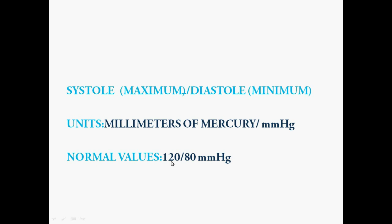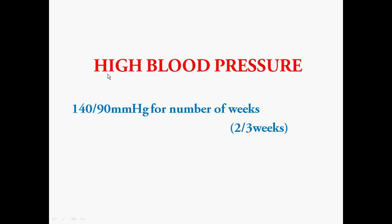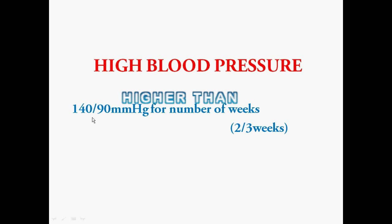The normal value of BP is 120/80 mmHg. A patient is said to have high blood pressure if they have a BP of 140/90 mmHg over a number of weeks. This time period — more than two or three weeks — is very important to diagnose high blood pressure. If a patient has 140/90 mmHg for just two days and then returns to normal values, they are not considered a high BP patient.